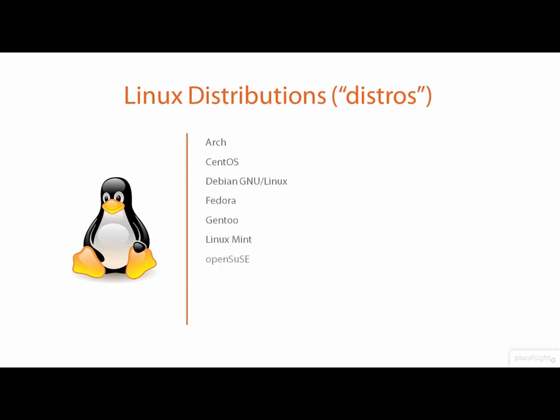You probably recognize at least one or two Linux distros in this list. That penguin there? That's Tux. He's been the logo for Linux since 1996 and has become one of the most recognizable symbols of the internet. When you want to form an abstract visualization of what the Linux kernel looks like, think of Tux. When you want to visually depict the Unix kernel, think of Korn.